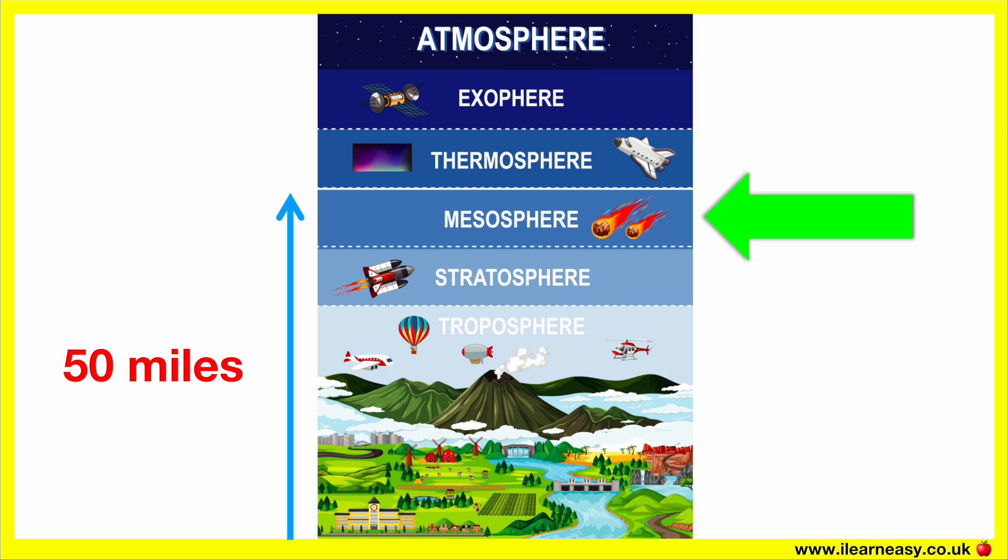To summarise: the mesosphere is the third layer in the atmosphere, and it's a very cold layer.